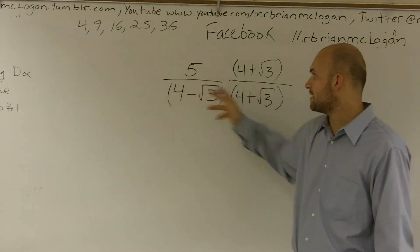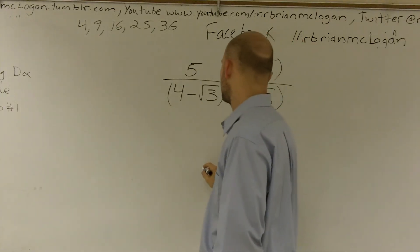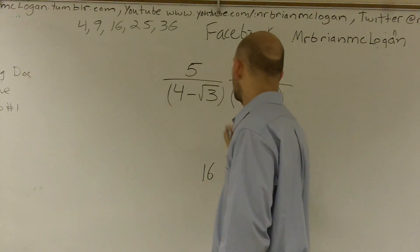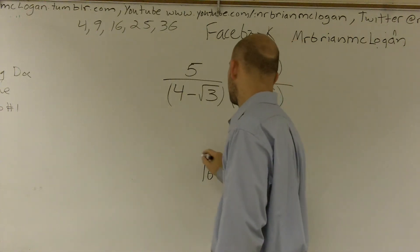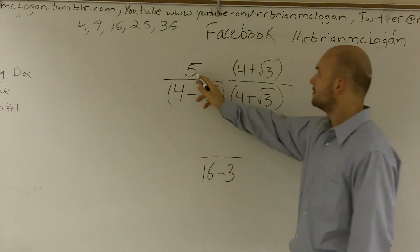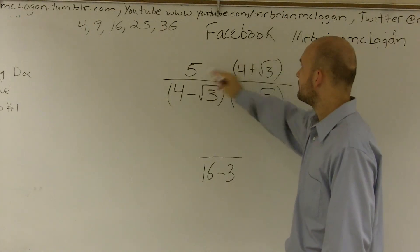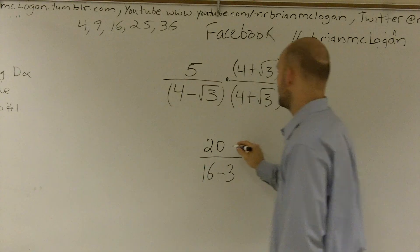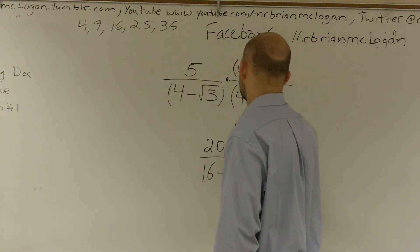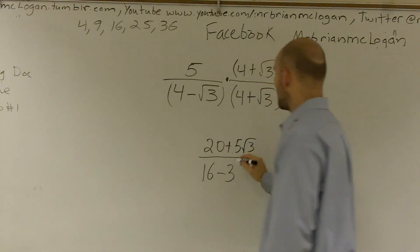By doing that, if I multiply the front two numbers, I'll get 16, and negative square root of 3 times positive square root of 3 is minus 3, all over—now I have to multiply the 5. 5 times 4 is 20, and 5 times square root of 3 is 5 radical 3.